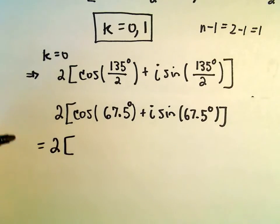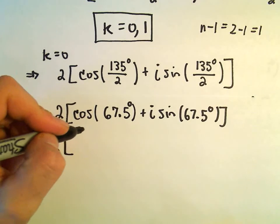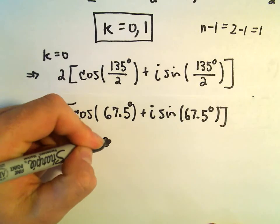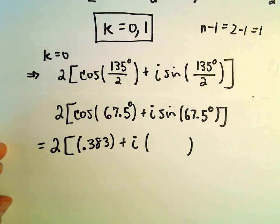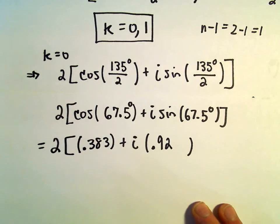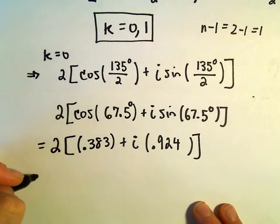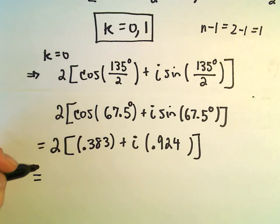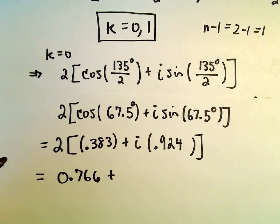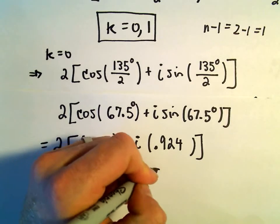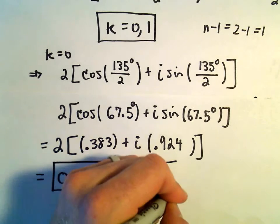So we can always plug this into a calculator. Let's see, so if we do 67.5, cosine of that, I'm getting cosine of 67.5 to be roughly 0.383 after rounding, plus i times sine of 67.5 degrees. So let me get that one, so 67.5, sine of that, I'm getting that to be roughly 0.924 after rounding. Well, so if we distribute the 2, 0.383 times 2, I'm getting 0.766, plus if we take, well, 0.924, and if we double that, we'll just get 1.848 times i. So that would be one of our roots in this case.